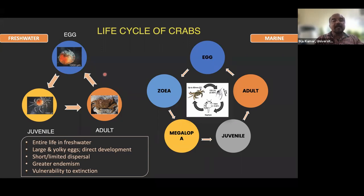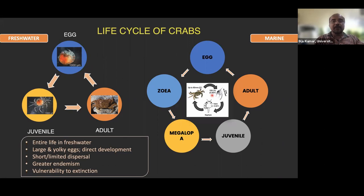In contrast, marine crabs develop eggs into zoea larvae, then megalopa larvae, distributed extensively by tides and currents, giving them much greater dispersal ability and fecundity. This explains why freshwater crabs show high endemism and why their conservation is a major challenge.